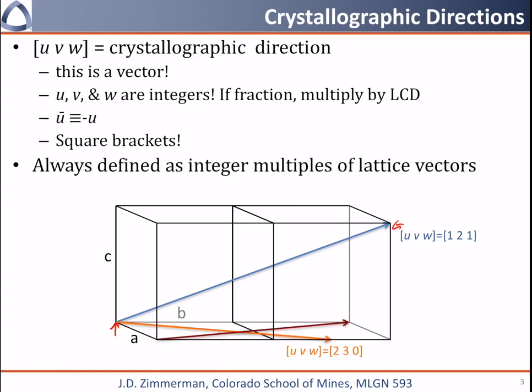Finally, here in maroon, we're going from this front corner to the back corner. We go negative 1 in the A direction, 2 in the B direction, and 0 in the C direction. So this gets noted as 1 bar, 2, 0.